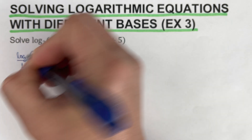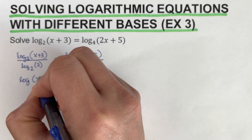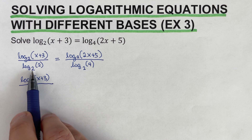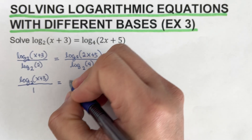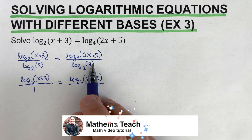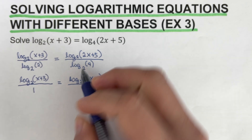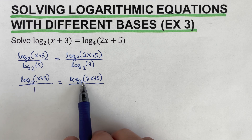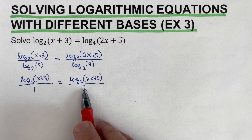The common base for both 2 and 4 is 2, since 2 is a factor of both. So we rewrite as log of (x + 3) to the base 2 over log of 2 to the base 2. The exponent of 2 that gives 2 is 1, so the denominator is 1. On the right side we have log of (2x + 5) to the base 2 over log of 4 to the base 2 — the exponent of 2 that gives 4 is 2, so that denominator equals 2. Now both sides share the same base 2.